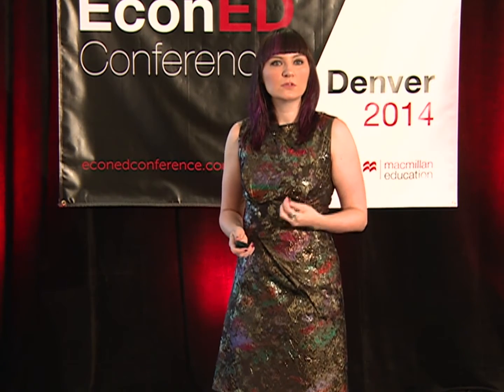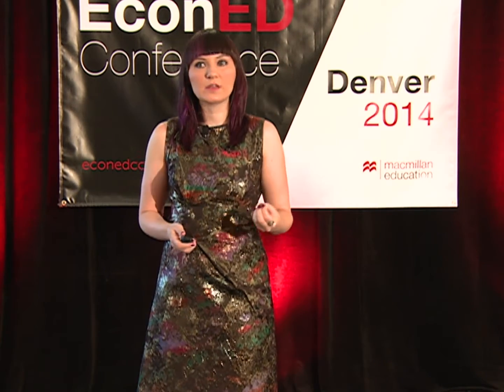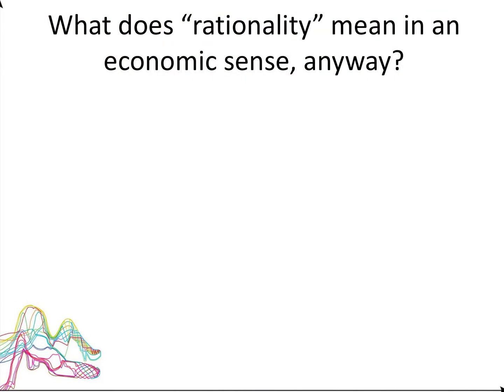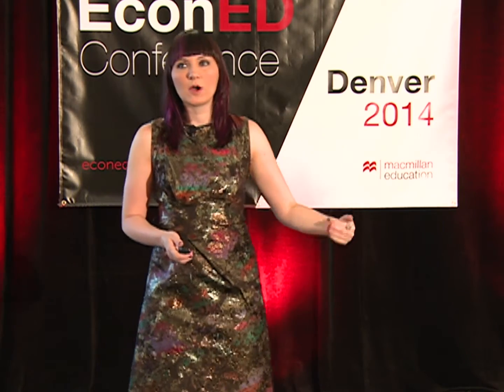Rather than trying to come up with models starting from the rationality assumption and seeing where we can get with that, we're saying instead: how about we try to understand how people actually think, how people actually behave when they're faced with decisions involving money, involving resource allocation, and so on. A lot of behavioral students get confused because we're talking about specific ways in which people are irrational, but we never explicitly talked about what it means to be rational on a detailed level.